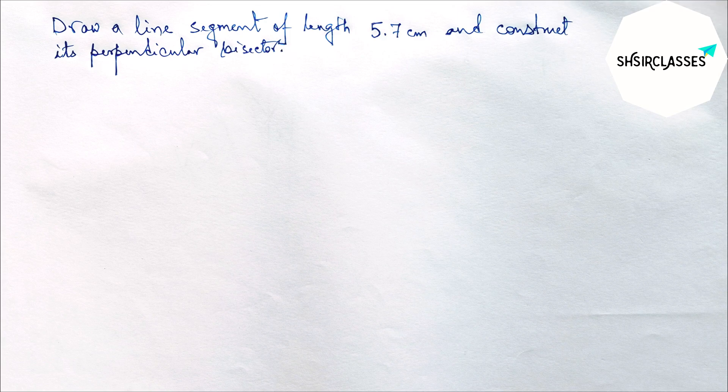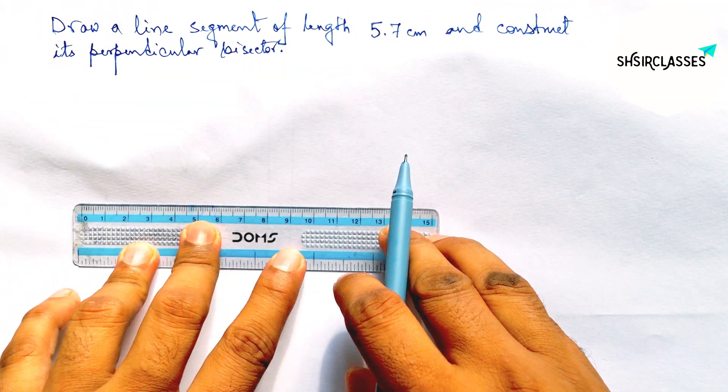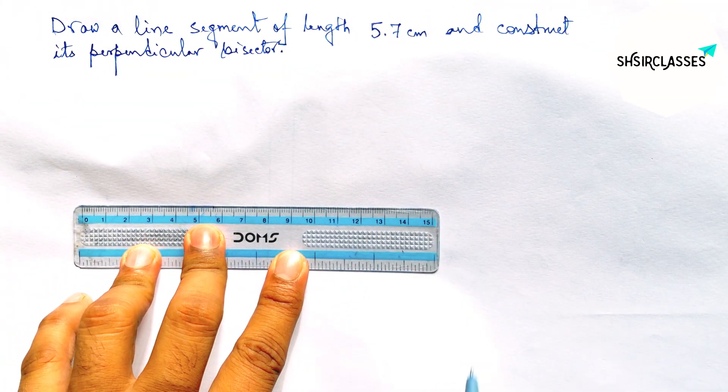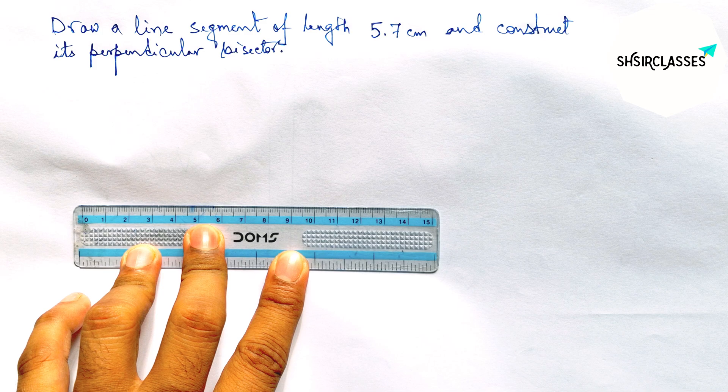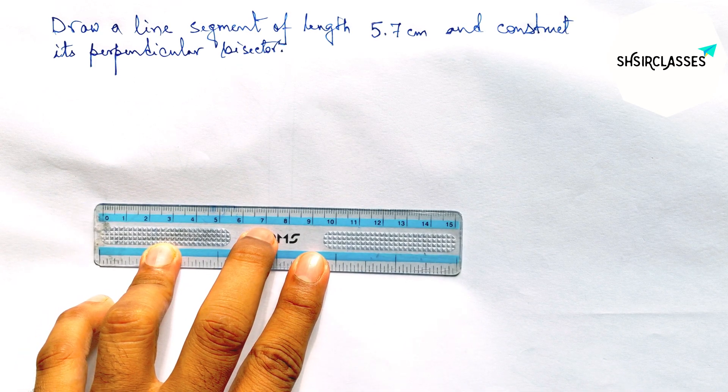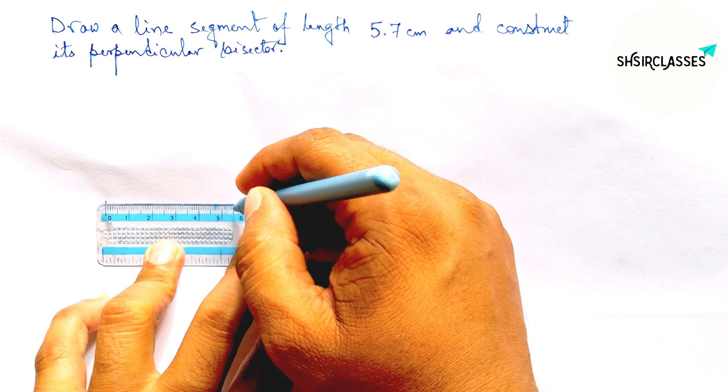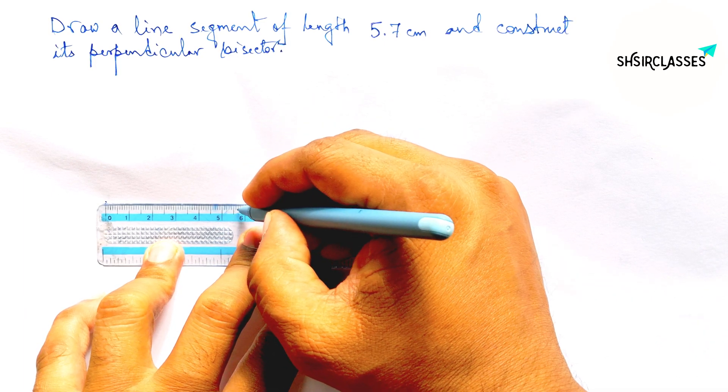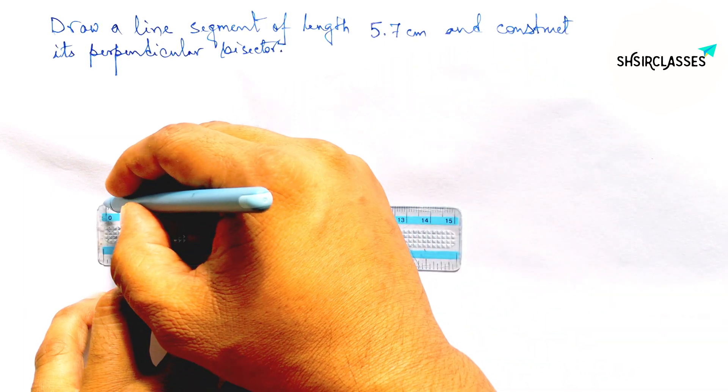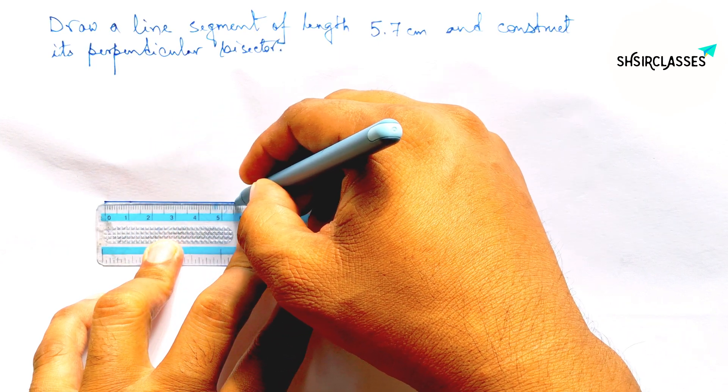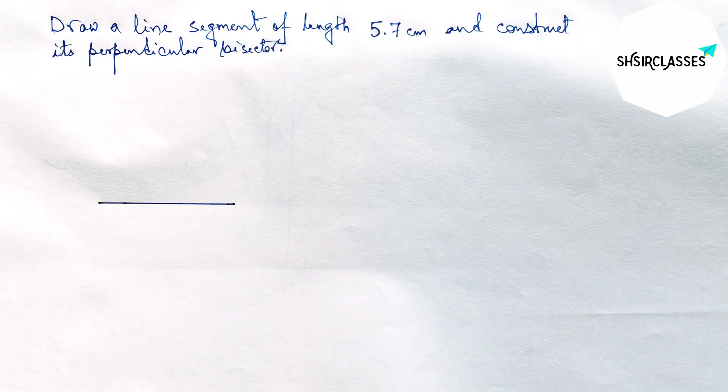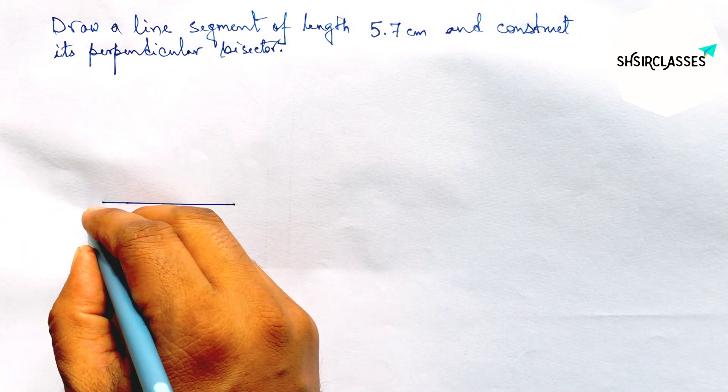First of all, let us draw here a line segment of length 5.7 centimeter. Marking here 5.7, so this is 5.5 and counting 2, so here this is 5.7 centimeter. Next labeling here A and B.